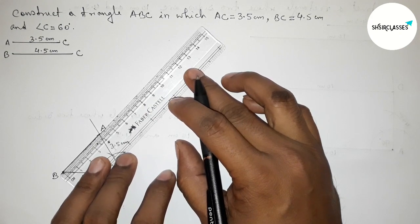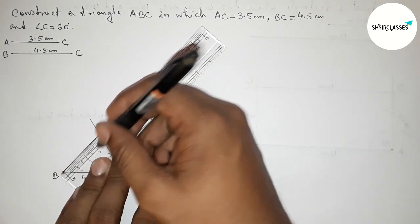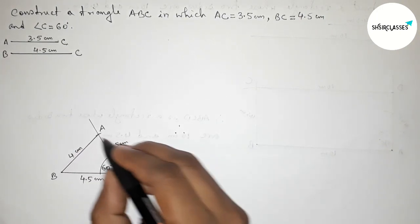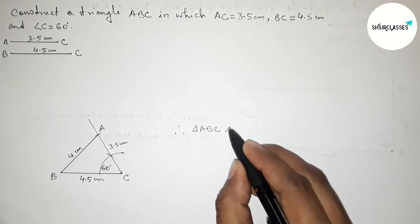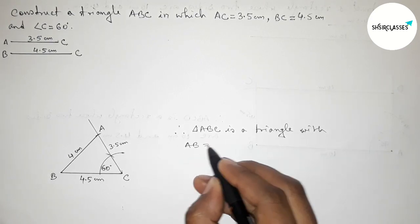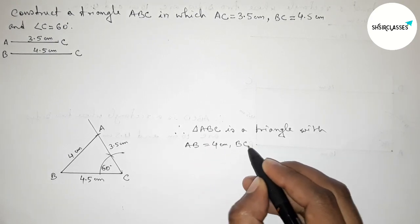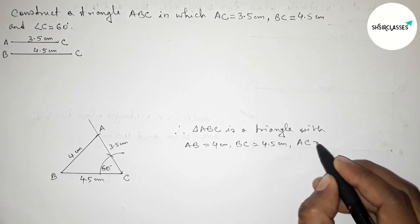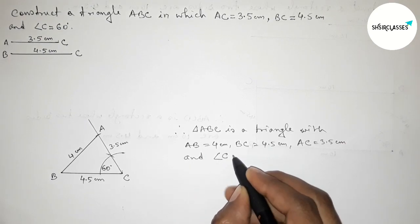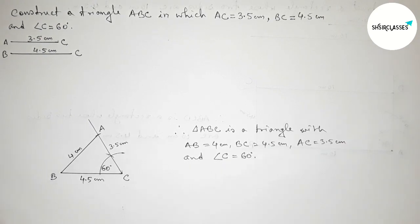Now measuring side AB with the help of a scale — the length of AB is 4 centimeter approximately. Therefore, triangle ABC is constructed with AB equals 4 centimeter, BC equals 4.5 centimeter, AC equals 3.5 centimeter, and angle C equals 60 degrees. That's all — thanks for watching. If this video is helpful, please share it.